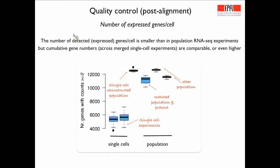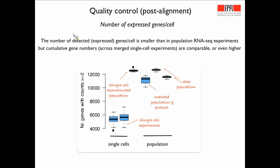A good quality measure is how many genes you see expressed. Counterintuitively, individual single cells show about 4,000 to 6,000 genes if the assay is done properly, but when you take into account all genes detected across all cells you typically find more genes expressed than from a bulk analysis. This shows the power of single-cell analysis — you detect transcripts completely missed in bulk analysis. A good quality measure is that the single-cell reconstructed population should be equal or even better than your bulk RNA-seq sample in terms of complexity.